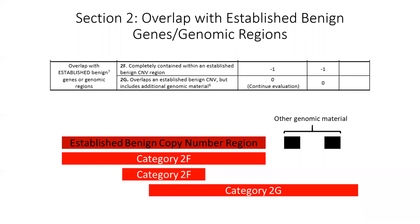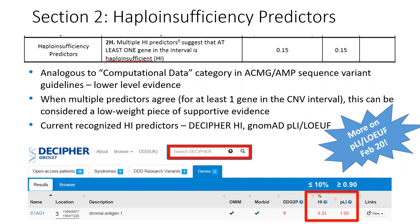Other supporting information to consider in the evaluation of deletions are haploinsufficiency predictors — analogous to the computational data category in the ACMG AMP sequence interpretation guidelines. This information alone is not given much weight, but a small number of points could be given if multiple predictors, such as the gnomAD pLI score and the Decipher haploinsufficiency index, suggest that at least one gene in your CNV interval could be haploinsufficient. We will hear more about the gnomAD pLI and LoF scores on February 20th.